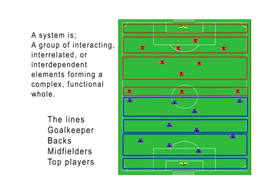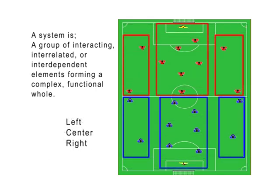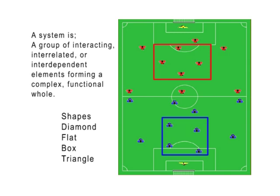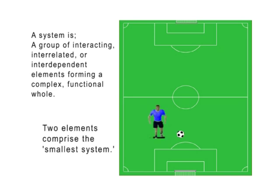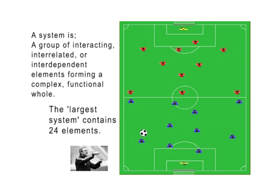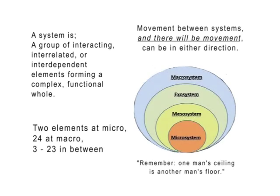Each subsystem can be divided again, here horizontally and here vertically. These subsystems can overlap to create other subsystems. In this guided discovery model, the smallest system will contain two elements in interaction — they can be a player and the ball, teammates, or two opponents. The maximum number of elements is 24: the 22 players plus the ball and a coach. Movement between systems is not limited to reduction, moving from a larger to a smaller number of elements; subsystems can increase in number or combine to become macro systems.